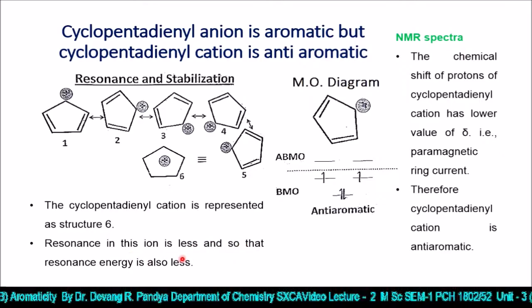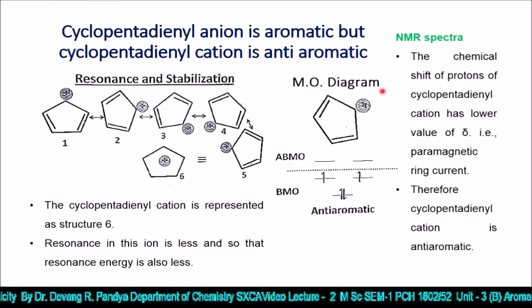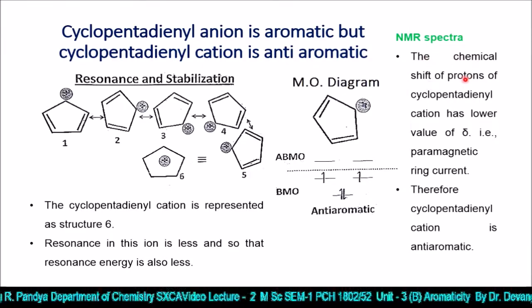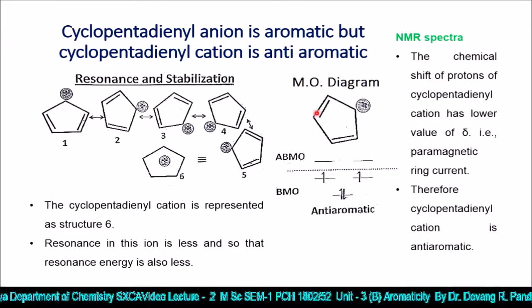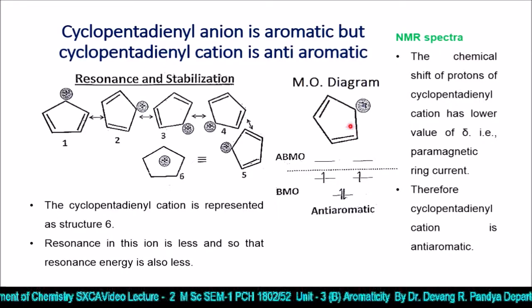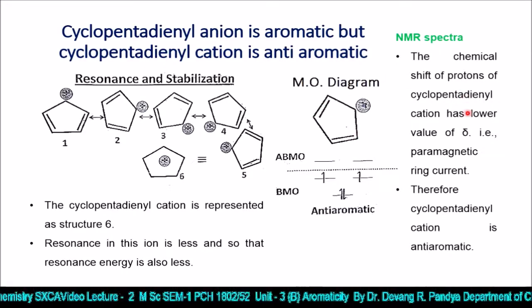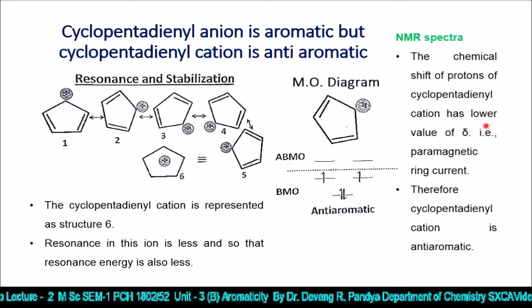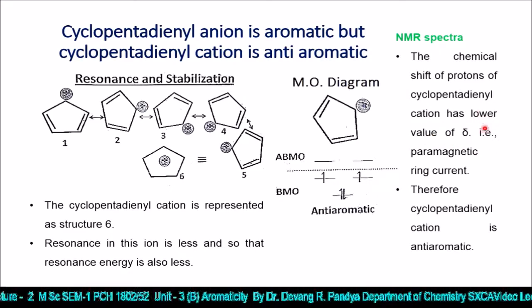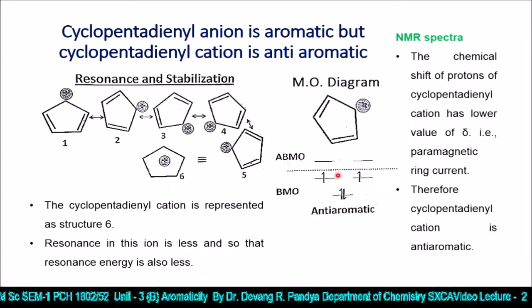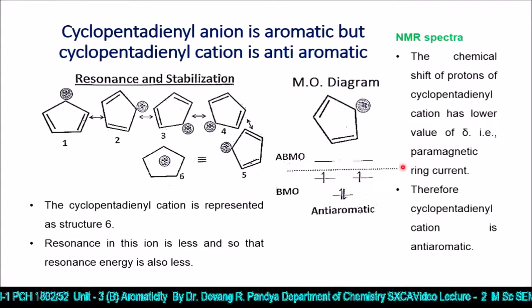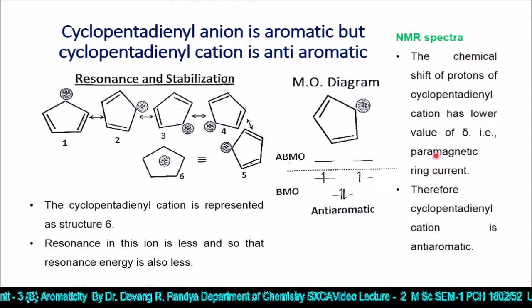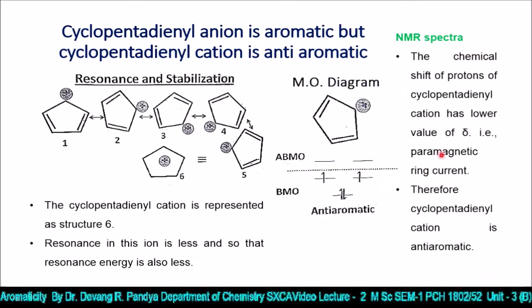The resonance energy of cyclopentadienyl cation is less than that of the anion. The chemical shift of protons on carbons 1 through 4 shows lower delta values. With unpaired electrons, the compound is paramagnetic, and the paramagnetic ring current also proves that this compound is anti-aromatic.